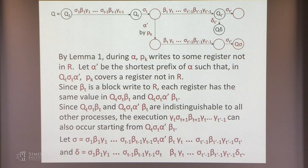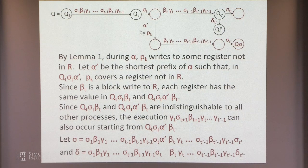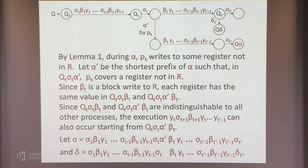We define sigma as this whole execution going along the t path, coming down, going all the way to Q_t-sigma_t. For delta, we go along the t-prime path and follow delta_{t'} down. So sigma goes one way and delta goes the other.